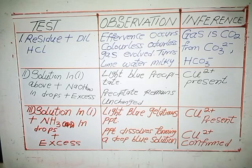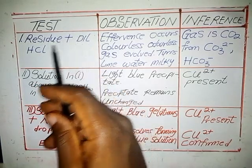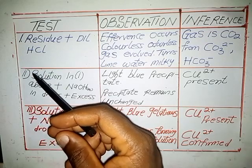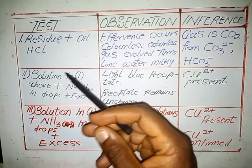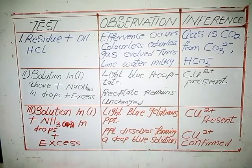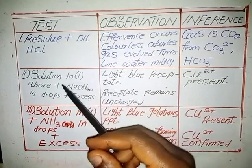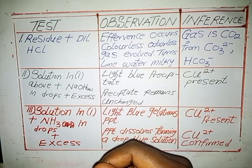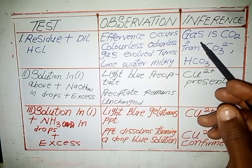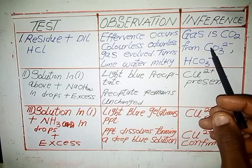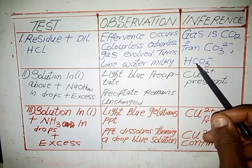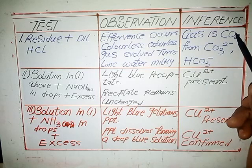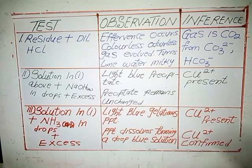The first test: add maybe 10 ml of dilute HCl to the residue. Remember, the residue is the copper carbonate. The observation is that a colorless, odorless gas is evolved which turns limewater milky. The inference is that the gas is CO2 from CO3²⁻ or HCO3⁻. It is advisable to put both ions to fetch some marks.